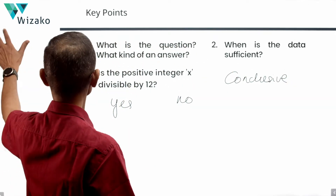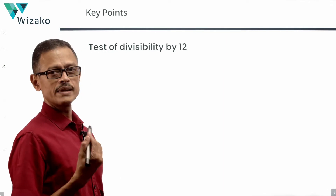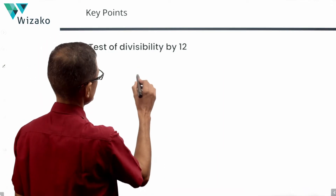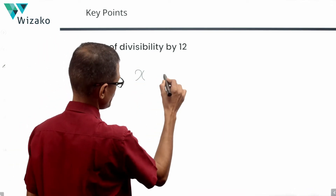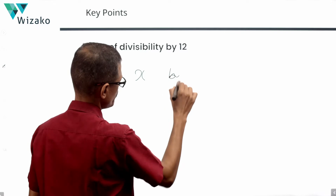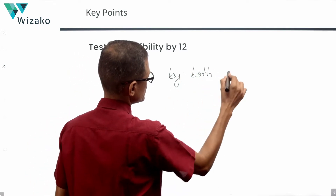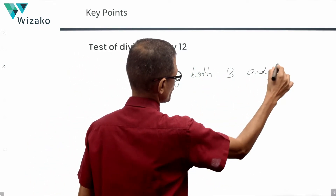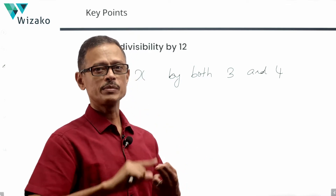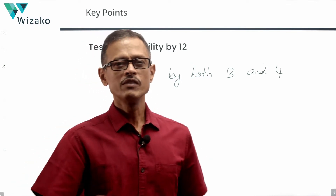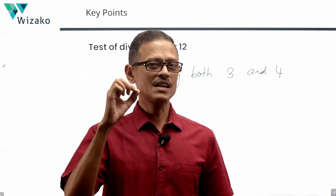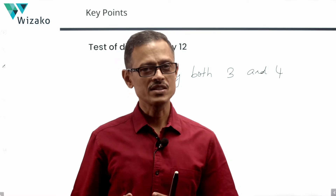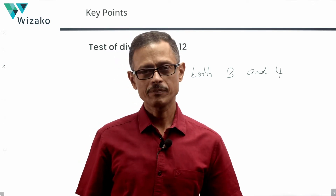What is the test of divisibility for 12? The number x should be divisible by both 3 and 4. The number should be divisible by 3, and the number should be divisible by 4. We should be able to establish both these conditions from the information given in the statements — in that case, the data will be sufficient.